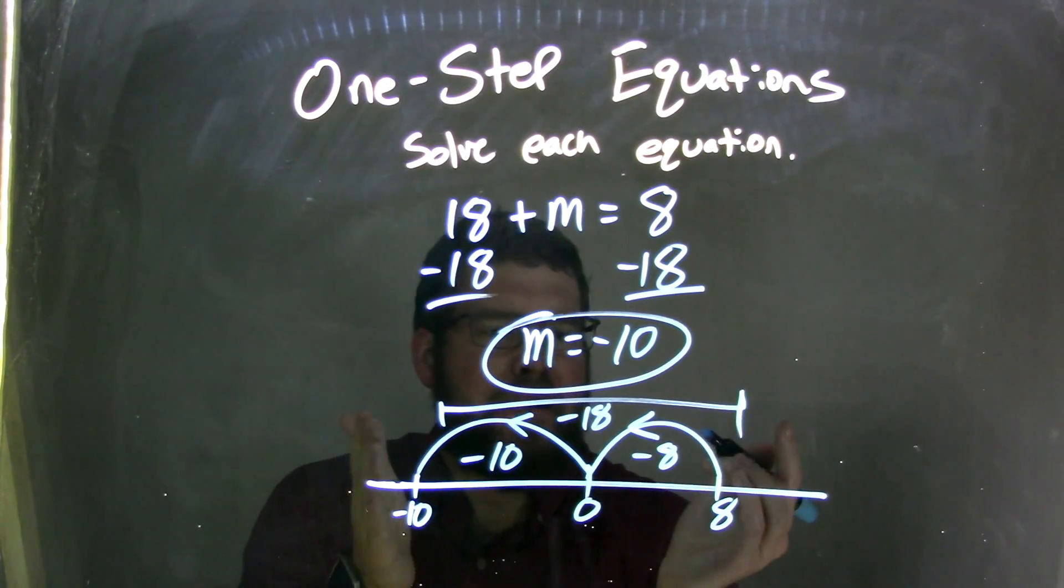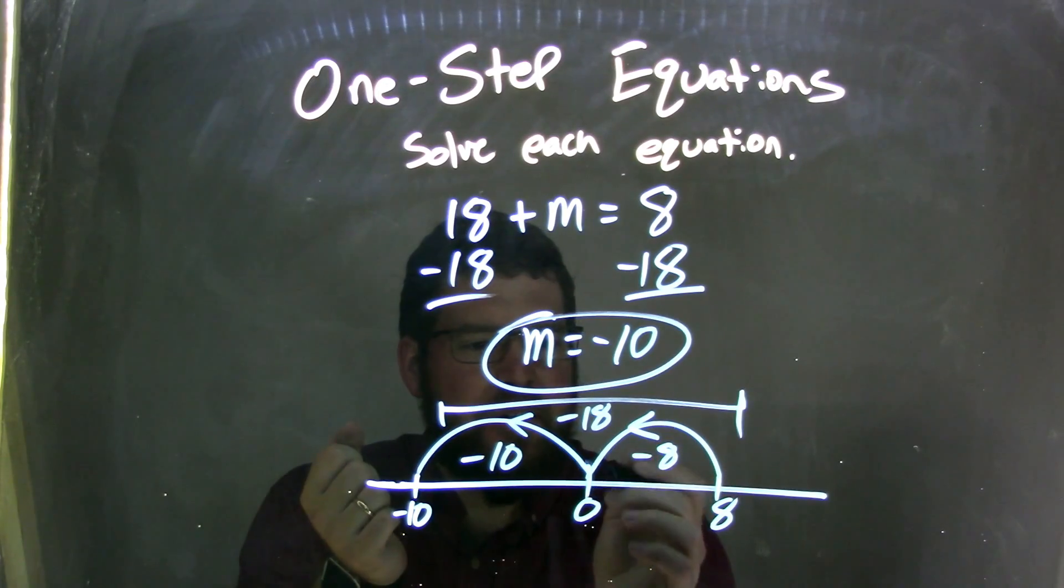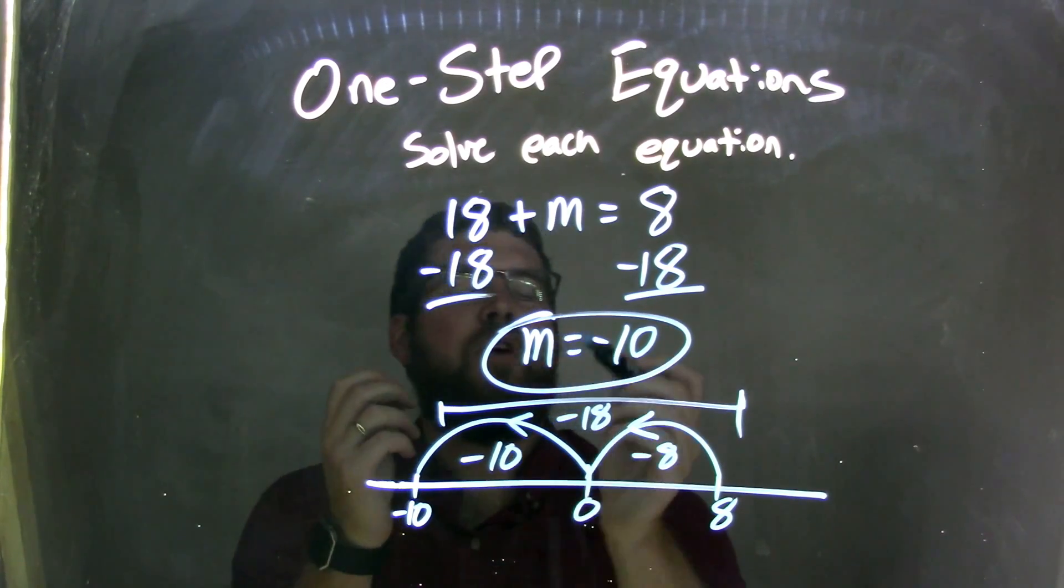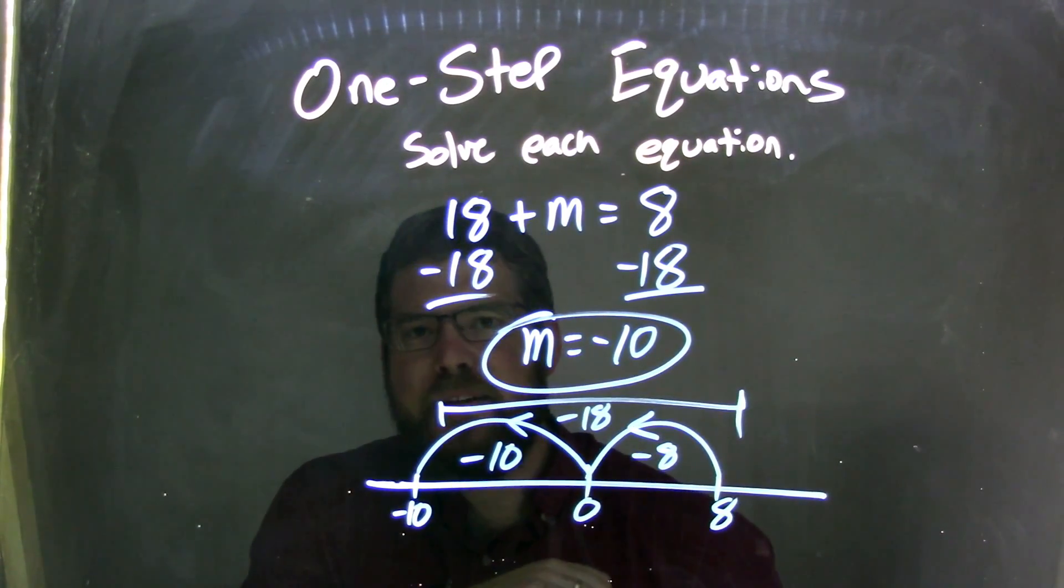So we have an overall subtraction of 18 from 8. We went 8 units to 0, another 10 to negative 10, and that's it. We're done. Our answer here is negative 10. So our final answer is m equals negative 10.